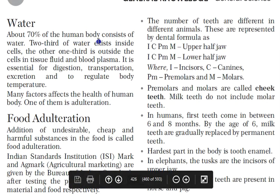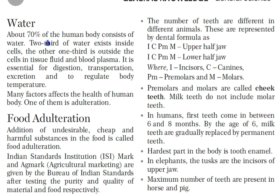About 70% of the human body consists of water. Two-thirds of the water exists inside the cell, and the other one-third is outside the cell in tissue fluid and blood plasma. Water is essential for digestion, transportation, excretion, and regulating body temperature, as well as urine formation.